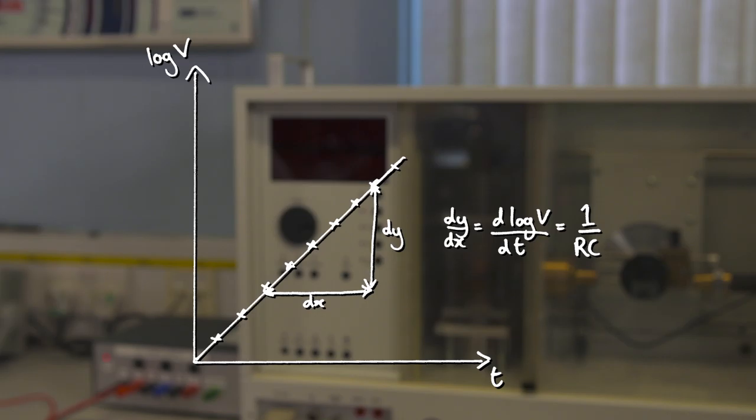Since the plot is exponential, to convert it to a linear plot, we need to plot log of voltage against time. RC is the time constant and we can get that from the gradient of the graph.